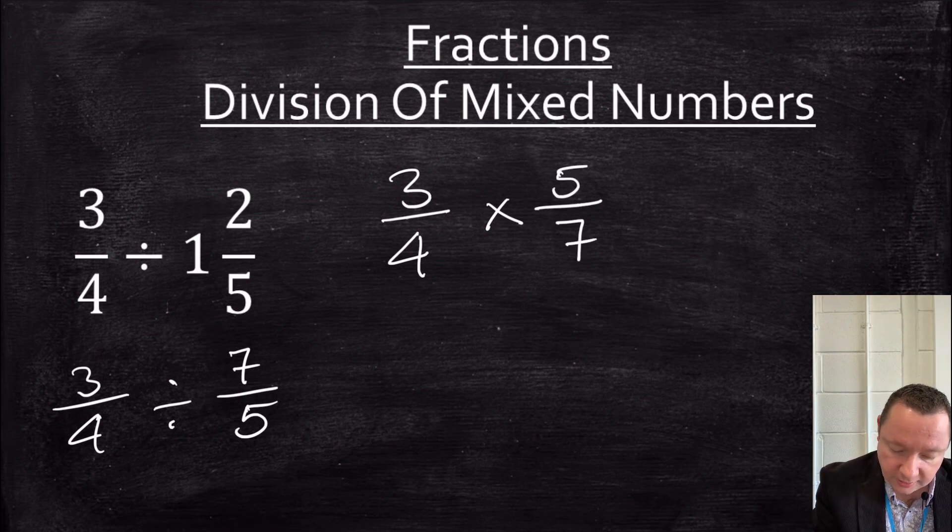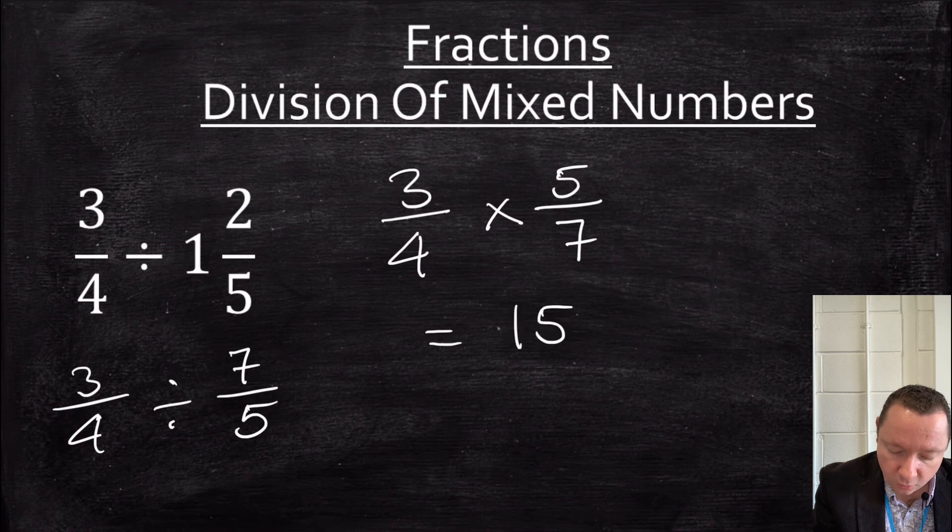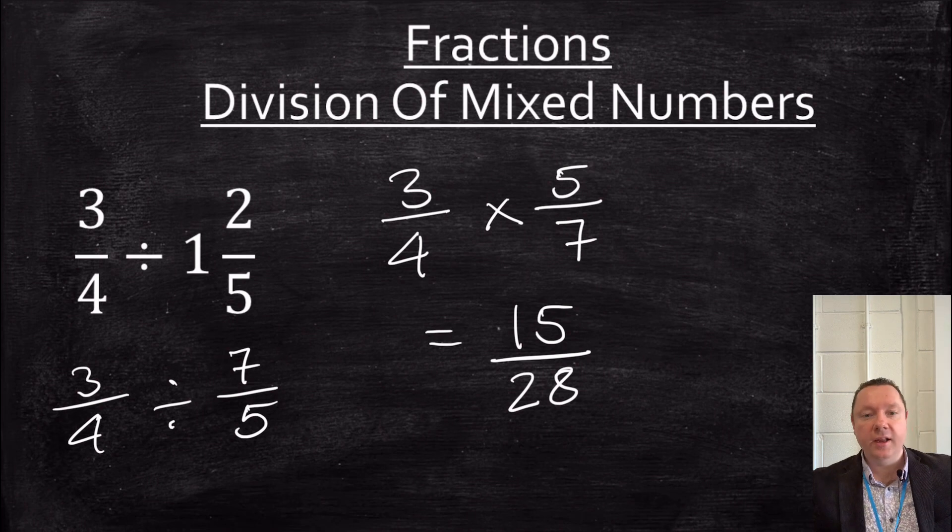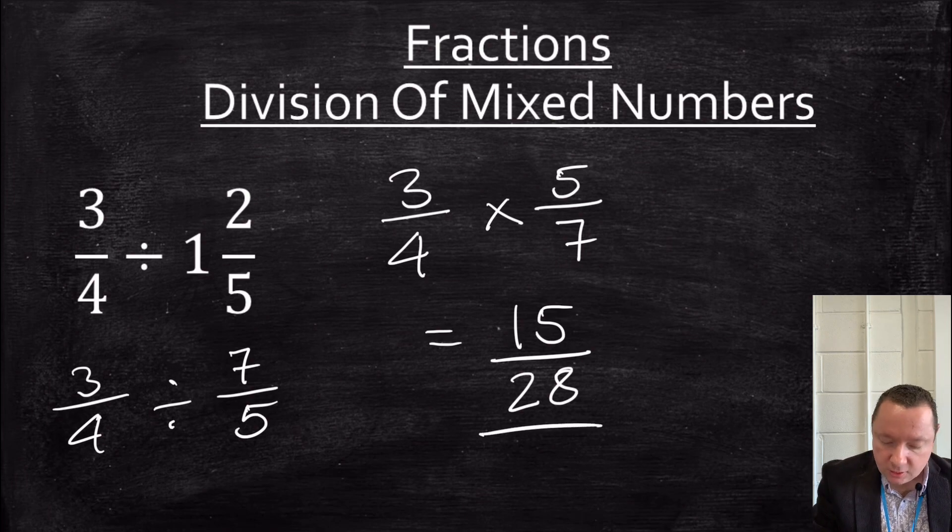And now, it's easy. 3 times 5 is 15. 4 times 7 is 28. Little check at the end, is there any numbers that go into 15 and 28? No, I cannot. There's no numbers that go into 15 and 28, so I'm done.